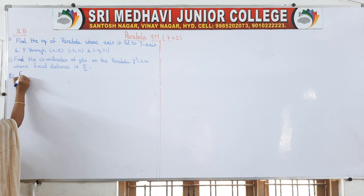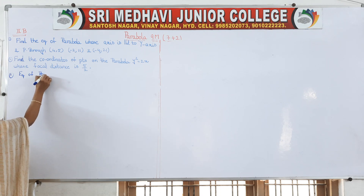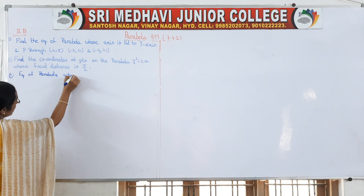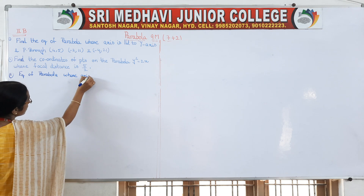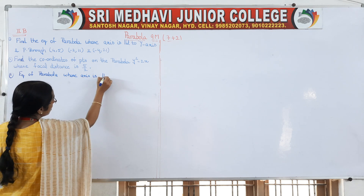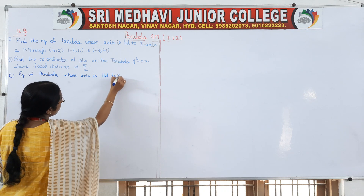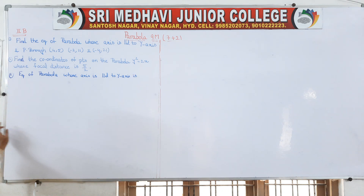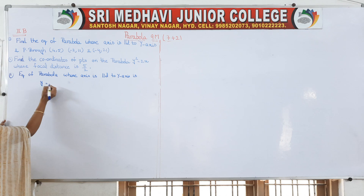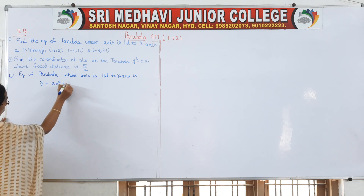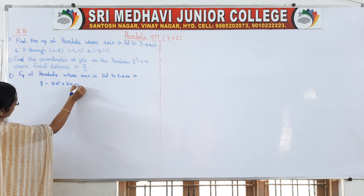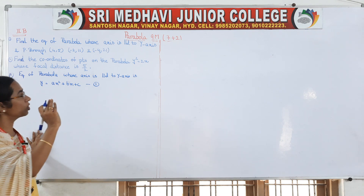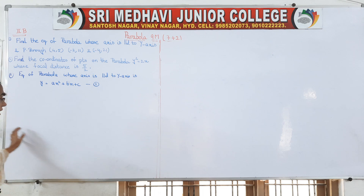The equation of the parabola whose axis is parallel to the y-axis is given in the question. The general equation is y = ax² + bx + c. Consider this as your first equation — the general equation of the parabola whose axis is parallel to the y-axis.